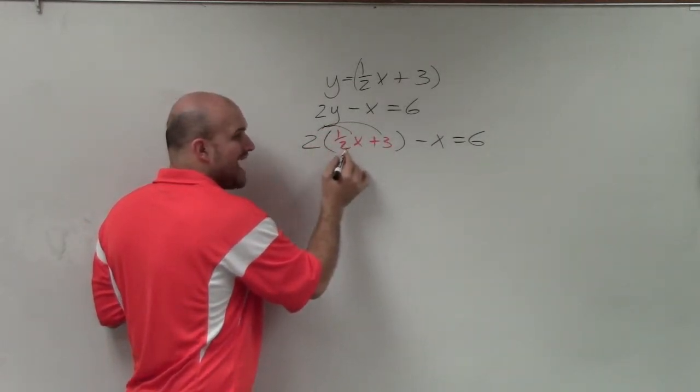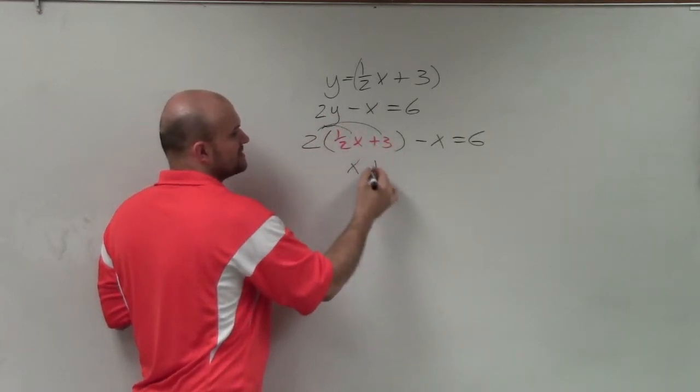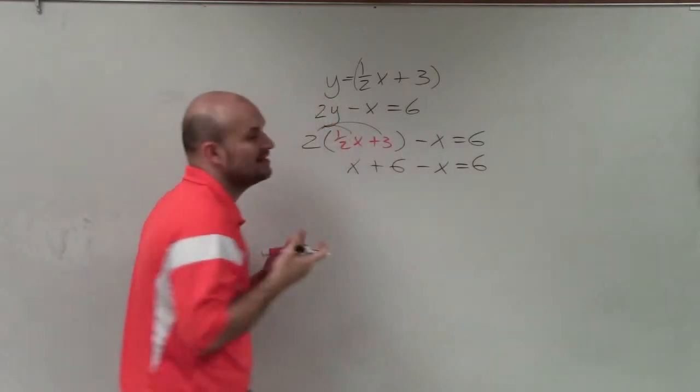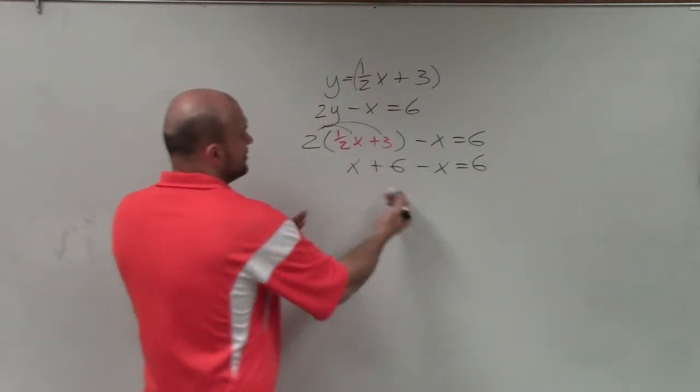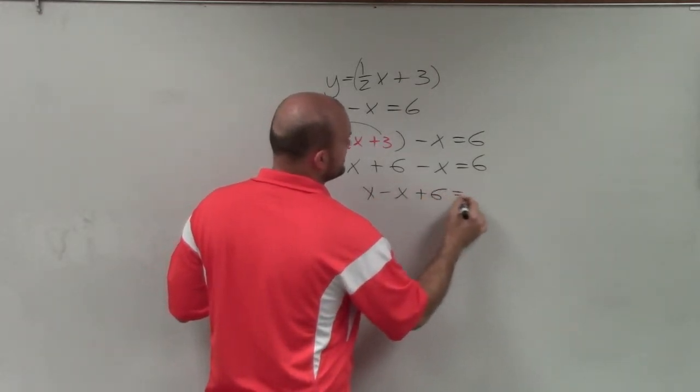And 2 times 1 half is just going to leave me with x. 2 times 3 is going to leave me with 6 minus x is equal to 6. Now I can combine like terms. A lot of times it's very helpful to put the variables right next to each other. So it's x minus x plus 6 equals 6.